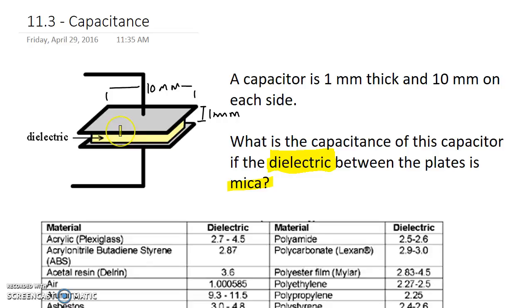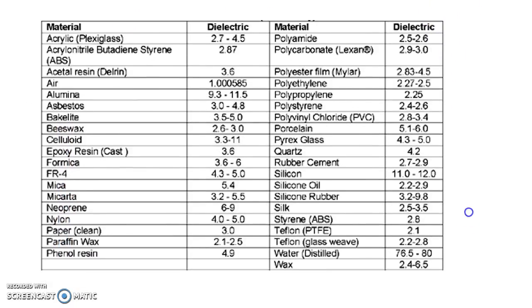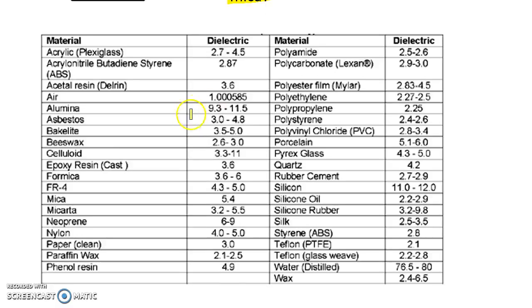Different dielectrics between the plates are going to allow us to store different amounts of charge on the plates. If we take a look at this list, we see that different materials have different dielectrics. Air's dielectric is about 1, but for mica, it's 5.4.